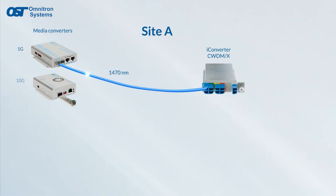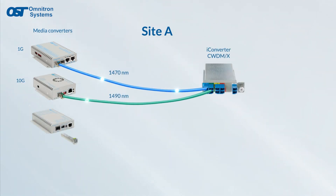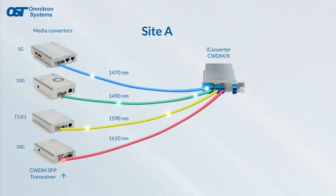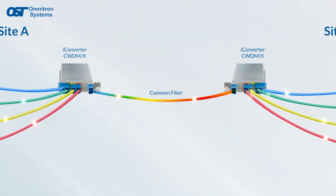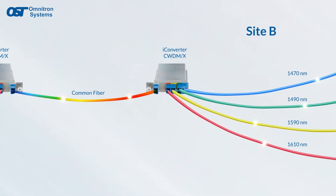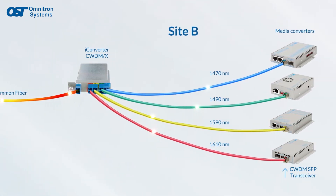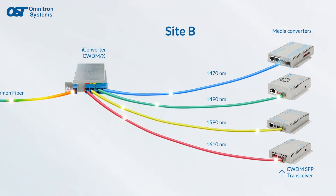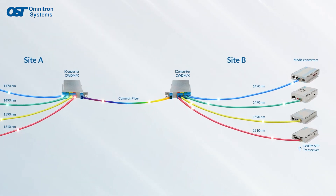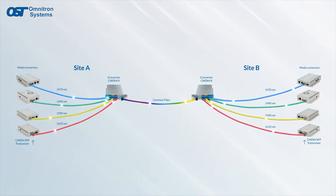The iConverter line features CWDM multiplexer modules that increase the bandwidth capacity of existing fiber by combining up to 16 different wavelengths over a fiber optic link. iConverter CWDM multiplexers are protocol and rate transparent, allowing different services up to 10 gigabits per second each to be transported across the same fiber link.